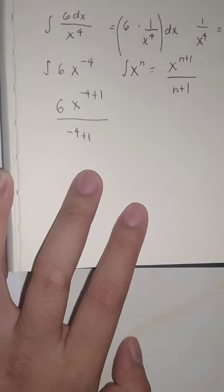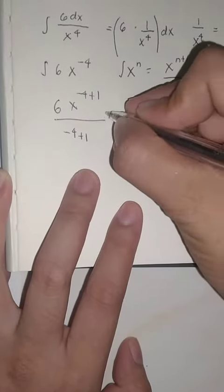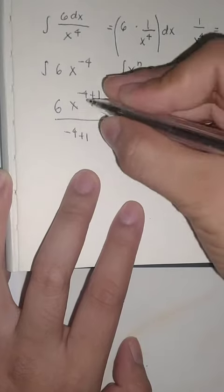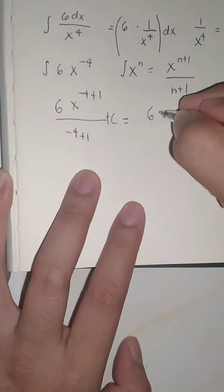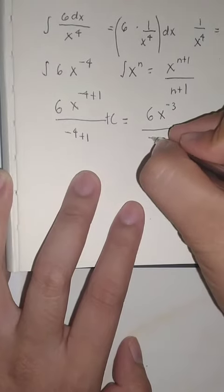Negative 4 plus 1 equals negative 3. It equals negative 3. So we have 6x raised to negative 3 over negative 3.